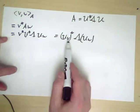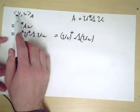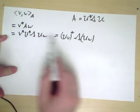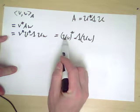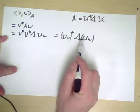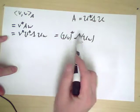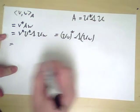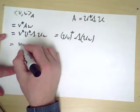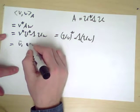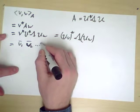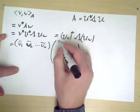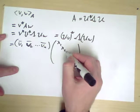In other words, if I want to take the bracket V W with respect to A, I can compute it this way. In some orthogonal basis U, I am essentially taking the standard Hermitian product of V and W in that new basis. But I'm stretching the different directions by different factors, lambda 1, lambda 2, up to lambda n.